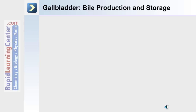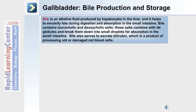The gallbladder is a storage site for bile produced by the liver. Bile is an alkaline fluid produced by hepatocytes in the liver, and it helps emulsify fats during digestion and absorption. Bile contains taurocholic and deoxycholic salts, and in the intestine these salts combine with fat globules and break them down into small droplets for absorption. Bile also serves to excrete bilirubin, which is a product of processing old or damaged red blood cells in the liver.